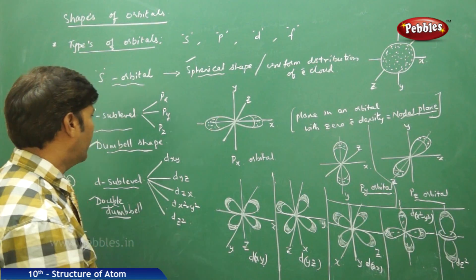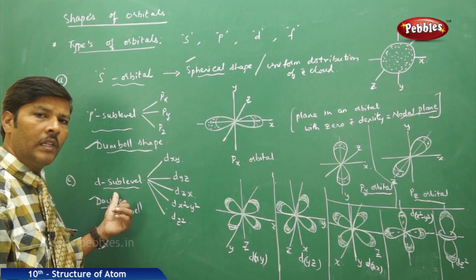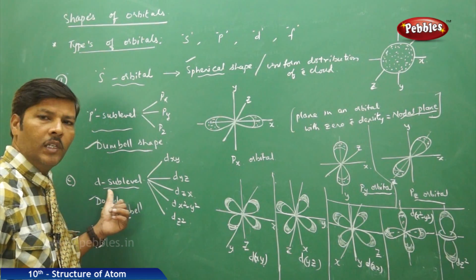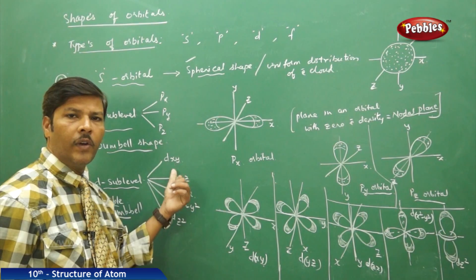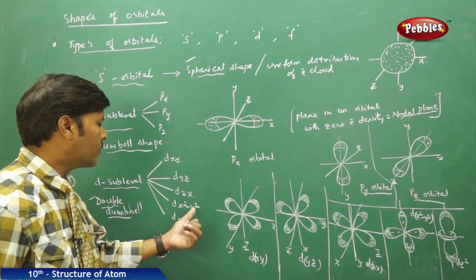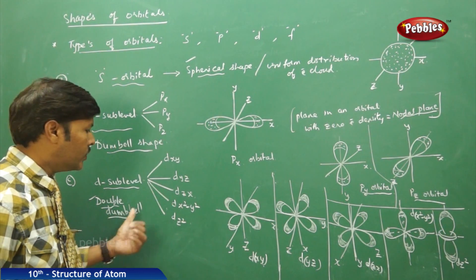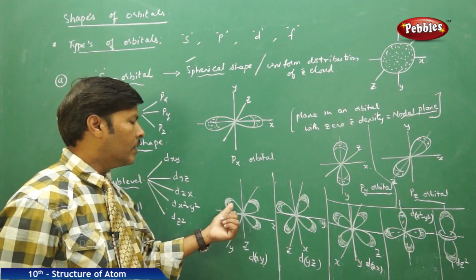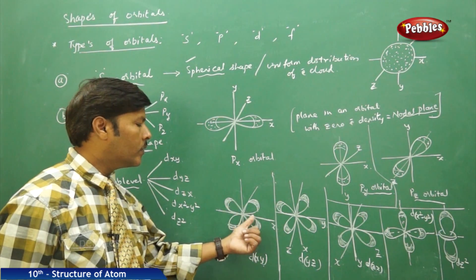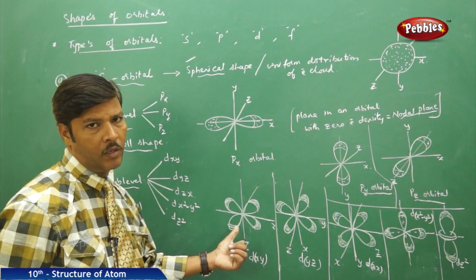In the d orbitals, what do we mean by double dumbbell? Four lobes are present: two lobes make one dumbbell, and another two lobes make a second dumbbell, giving a double dumbbell shape overall. For the dxy orbital, you can see three axes — x, y, and z — with electron density across both the x-axis and the y-axis.